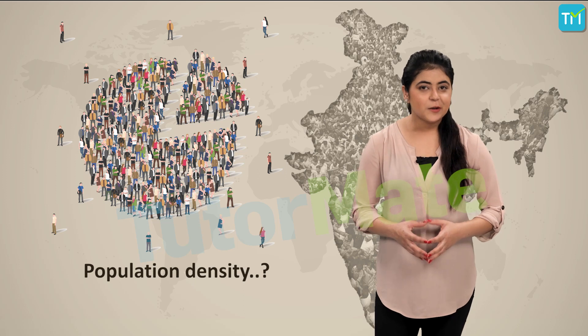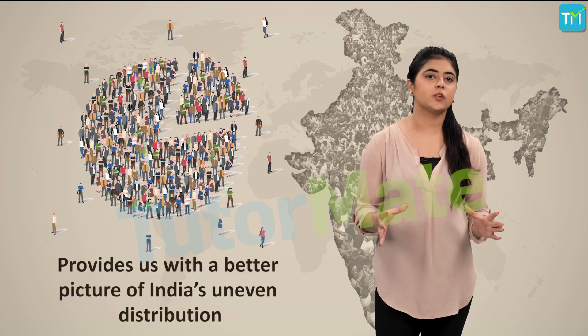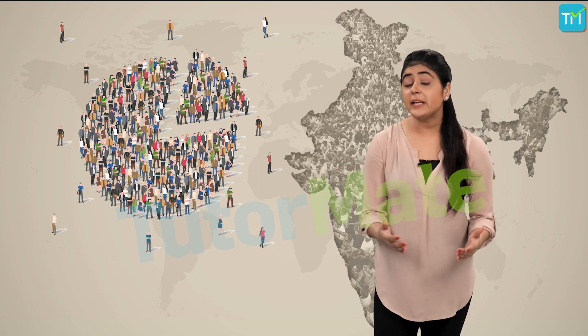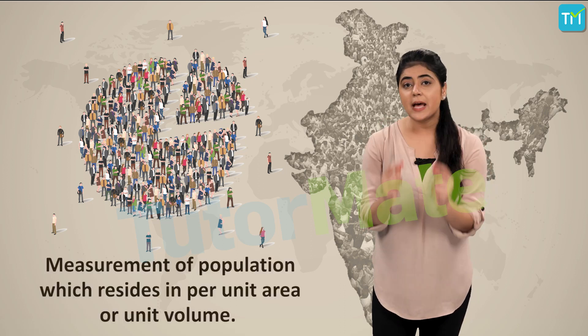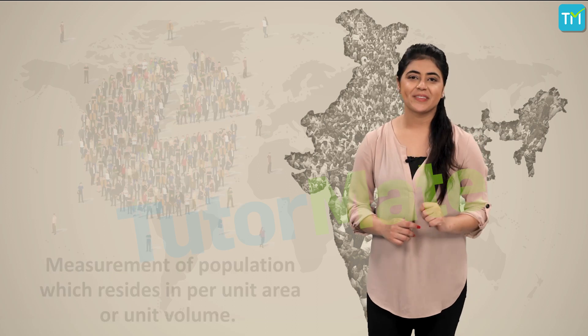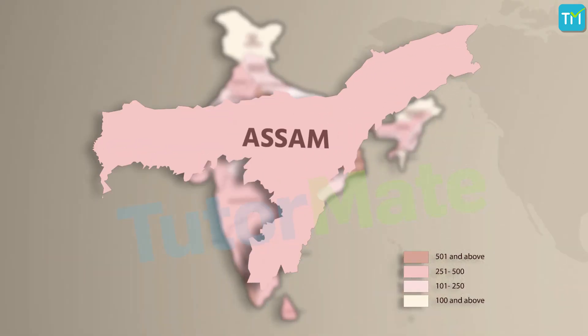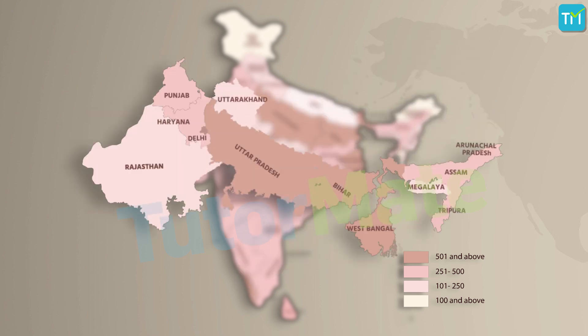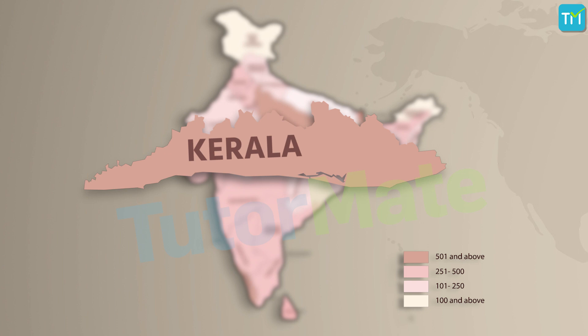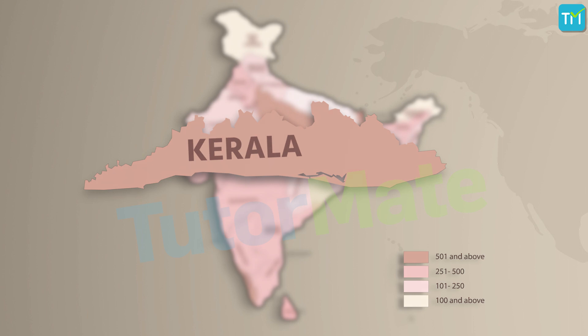Population density provides us with a better picture of India's uneven distribution. Population density refers to the measurement of population which resides per unit area or unit volume, calculated as the number of persons per unit area. According to the 2011 census, the population density of India stands at 382 persons per square kilometer. India has an uneven population distribution. Assam and most of the peninsular states have moderate population densities because of hilly terrain, shallow rainfall, and less fertile soil. But the northern plains and Kerala have high population densities owing to flat plains, fertile soil, and abundant rainfall, showing how natural factors affect the number of people residing in a particular area.